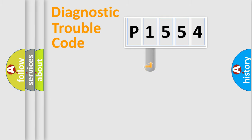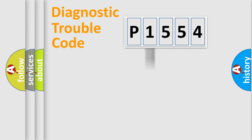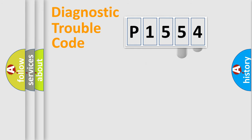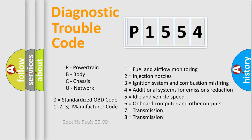This distribution is defined in the first character of the code. If the second character is expressed as zero, it is a standardized error. In the case of numbers 1, 2, or 3, it is a manufacturer-specific error expression. The third character specifies a subset of errors, and this distribution is valid only for the standardized DTC code. Only the last two characters define the specific fault of the group — but only when the second character is zero.